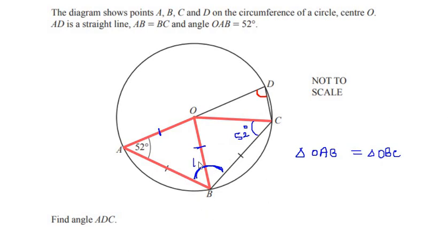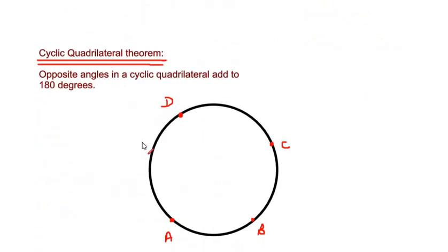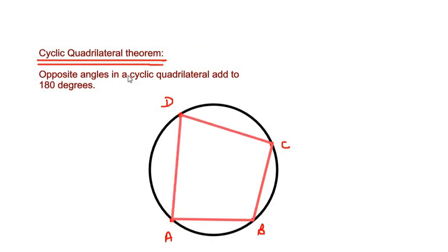So we have angle B as 104 degrees. Now let us see if we can use any circle theorem to find angle D. We can say that ABCD is a cyclic quadrilateral because the vertices of the quadrilateral lie on the circle. I have already drawn a circle — let me join the points A, B, C, D and back to A.